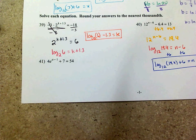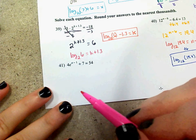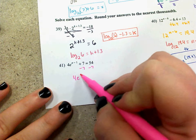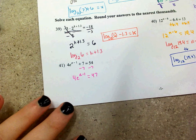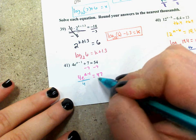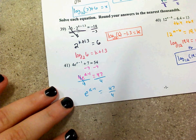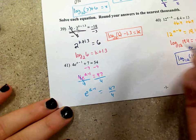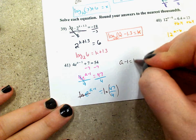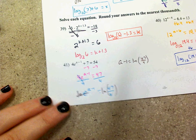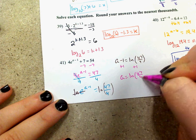On problem 41, the variable is up in the power of the exponential e. Subtract 7: 4e to the a minus 1 equals 47. Divide by 4: e to the a minus 1 equals 47/4. Take the natural log of both sides — the natural log and e cancel — leaving a minus 1 equals natural log of 47/4. Add 1: a equals natural log of 47/4 plus 1.